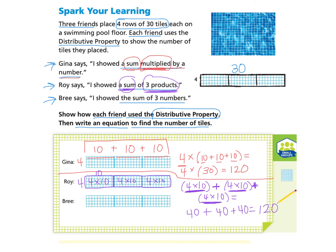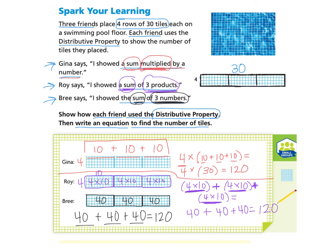Brie says she showed the sum of three numbers. Brie looked at each array and knew that this array was 40, this array was 40, and this array was 40. The strategy she used was just to add the sum of three numbers. When you add 40 plus 40 plus 40, you get 120.